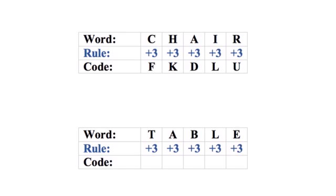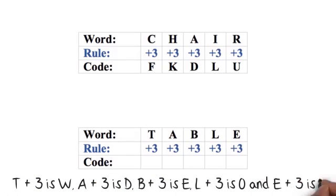Now you know the rule is plus three, it is easy to work out the code for TABLE. Write down the word TABLE with the rule directly underneath it. Word: TABLE. Rule: plus three. Code: T plus three is W, A plus three is D, B plus three is E, L plus three is O, and E plus three is H. Write down the letters and you'll have the code: W D E O H.